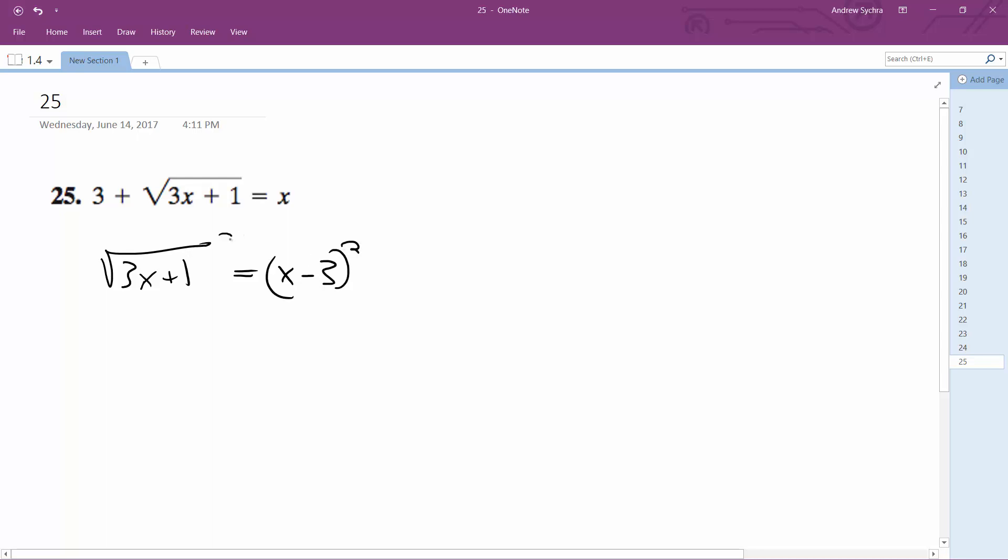We're going to square both sides. We get 3x plus 1 is equal to x squared minus 6x plus 9.